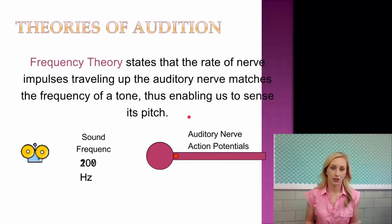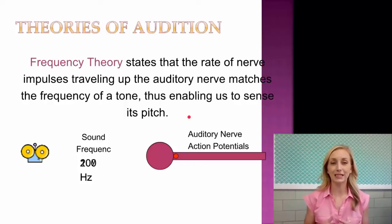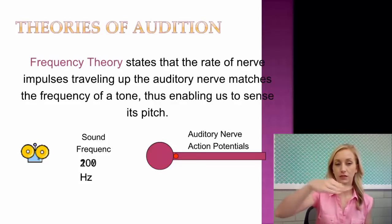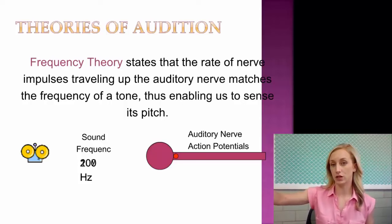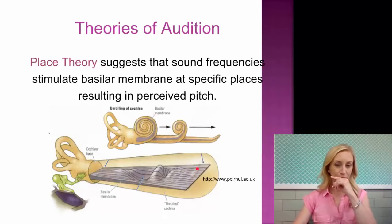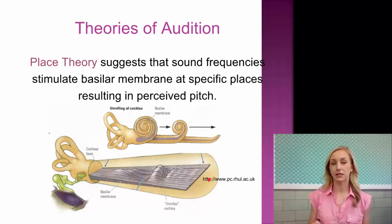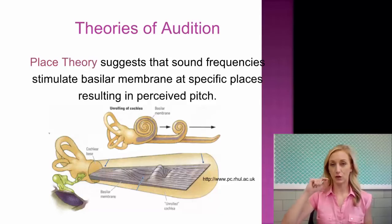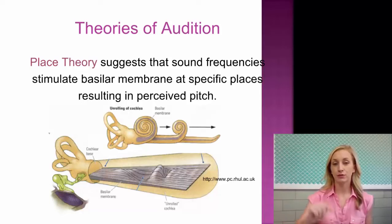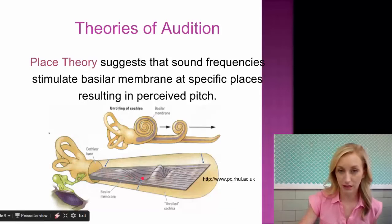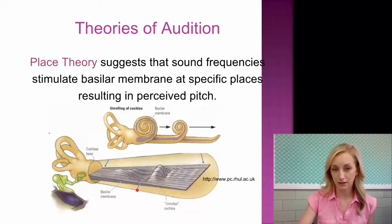There are two theories of how we hear pitch. The frequency theory states that the rate of nerve impulses traveling up the auditory nerve matches the frequency of a tone or sound, thus enabling us to sense pitch — the frequency of the wave continues up the auditory nerve, allowing us to perceive pitch. The other theory is place theory, which suggests that sound frequencies stimulate the basilar membrane at a specific place, resulting in perceived pitch. Depending on the pitch of the sound, it will stimulate a specific location on the basilar membrane, which allows us to perceive that particular pitch.